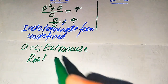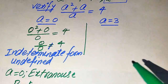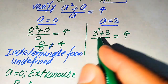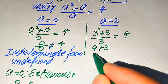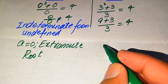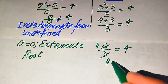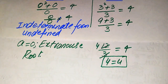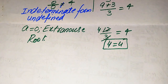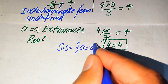We conclude that a equals 0 is an extraneous root. Now substituting a equals 3: three squared plus three, divided by three equals 4. Nine plus three is twelve, and twelve divided by three equals 4. So 4 equals 4, which confirms the left hand side equals the right hand side. Therefore a equals 3 satisfies the given equation.